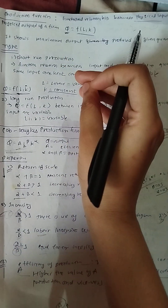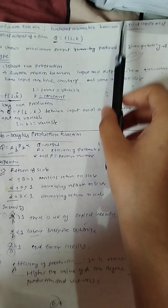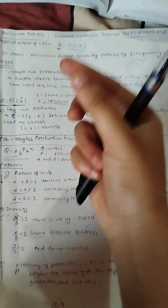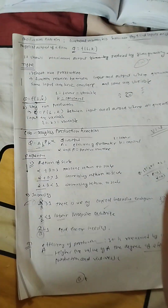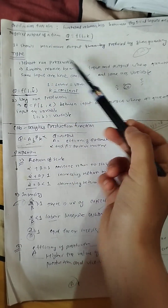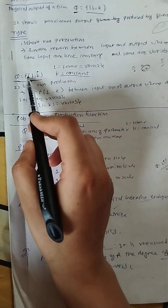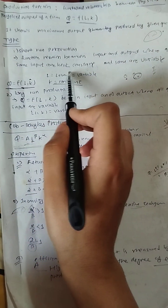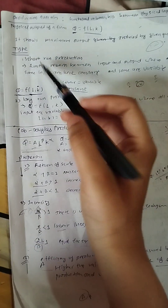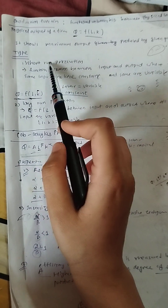What is the production function? Write the types of production function - this is a 5-mark question. The production function is a functional relationship between physical input and physical output. There are two types: short-run production function and long-run production function. Short-run production function is a functional relationship between input and output where the quantity of some inputs is constant and some are variable.